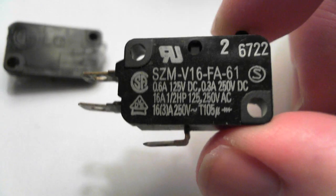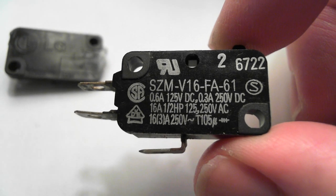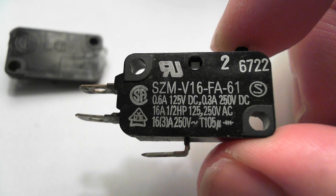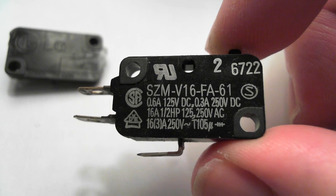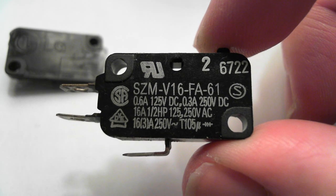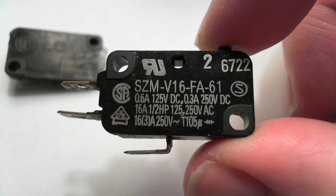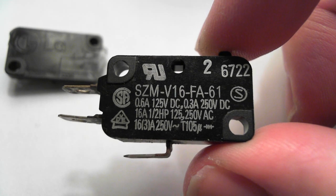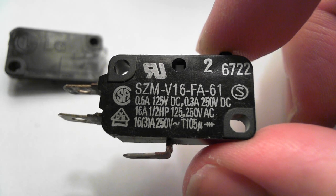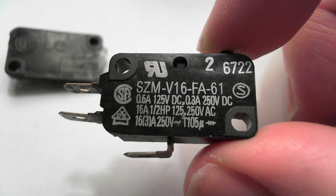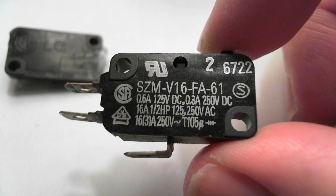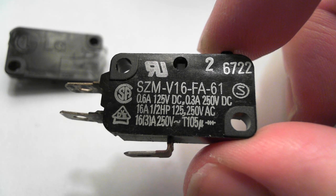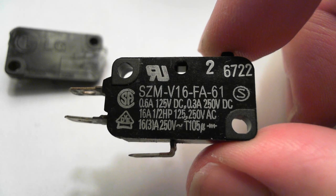Hi, what we are looking at today is an LG single pole double throw relay. This one was taken out of a microwave and it is model number SZM-V16-FA-61. 600mA at 125VDC, 300mA at 250VDC. I do not actually know what the rest of the numbers mean without looking them up.